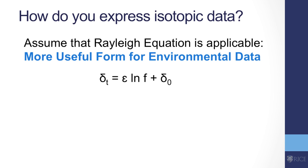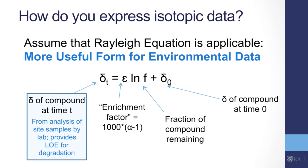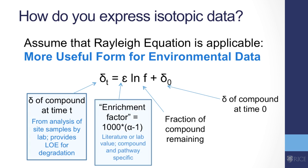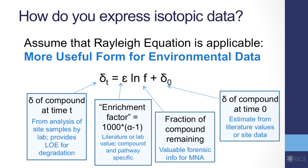How do we know what values to use? For the DEL at time t, that's what you're actually measuring — you grab samples and measure what you see. The enrichment factor is usually available in the literature, though you could determine it in your own lab with enough data. The fraction of compound remaining is often what you're trying to determine. And your initial DEL can come from field data or from estimates for what might be present in a manufactured product.